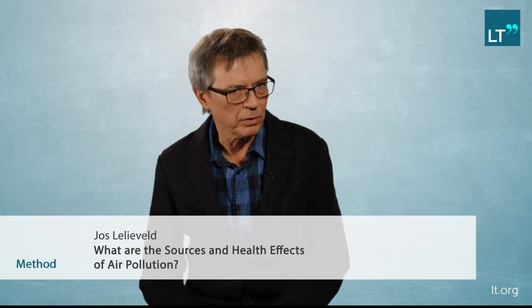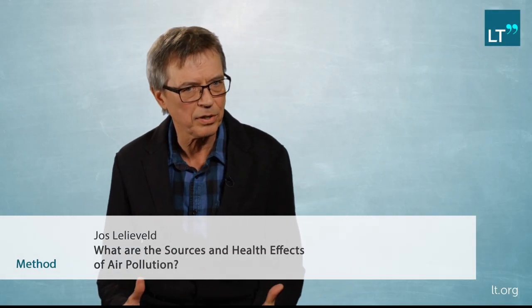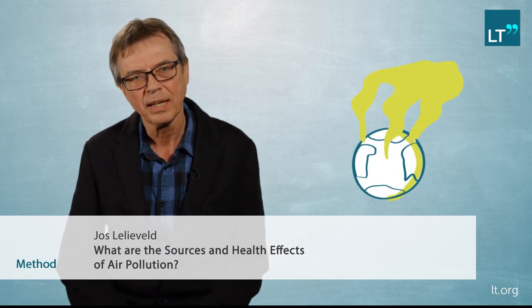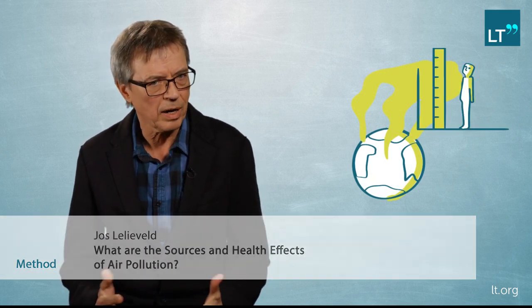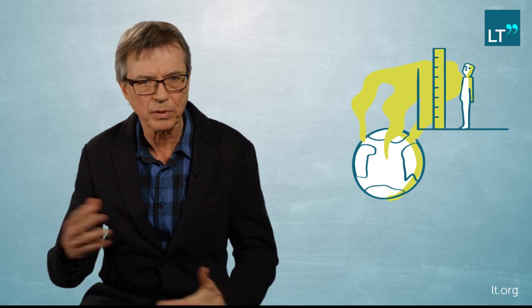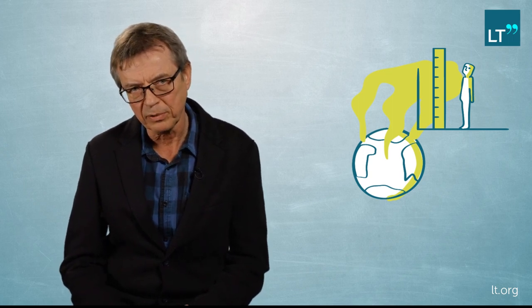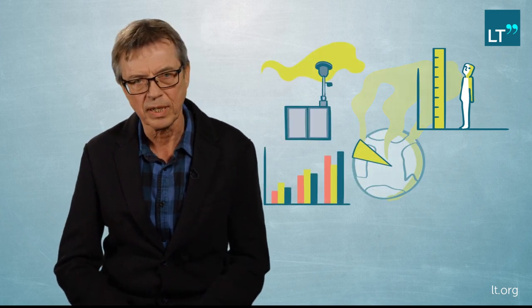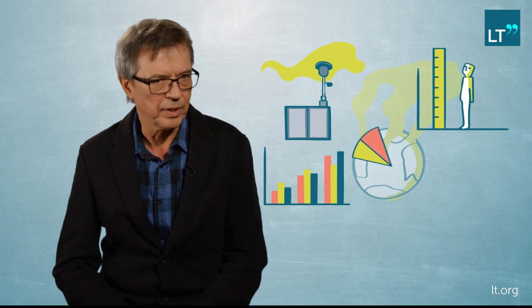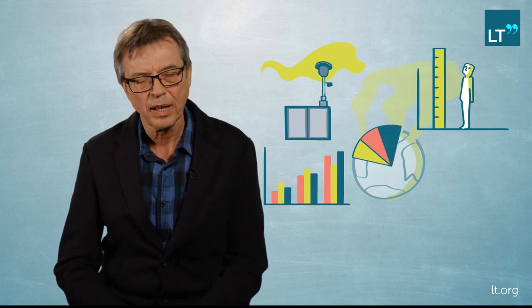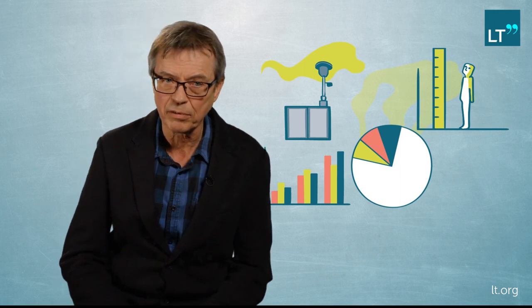The method we use is to estimate how much worldwide air pollution exposes people — so how much are people exposed to air pollution. Since air pollution moves around in the atmosphere very quickly, we need to do this on a global scale. We need to know how much air pollution goes from China to the United States and from the United States to Europe. We have measurement stations in Europe, for example in Germany, but also in the United States and some other parts of the world.